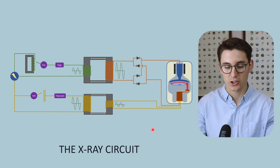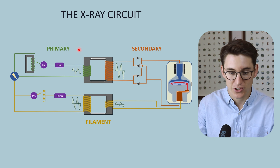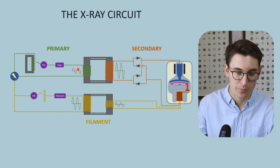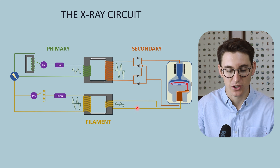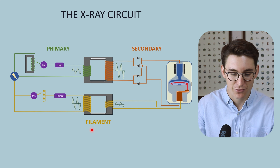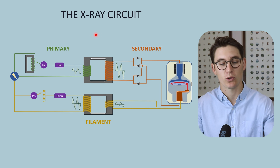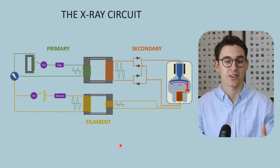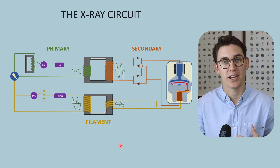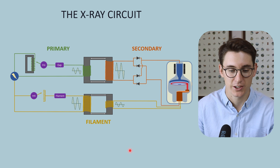In today's talk I'm going to be looking at what's known as the primary x-ray circuit. Our x-ray circuit can be separated into a primary low-voltage circuit, a secondary high-voltage circuit, and a filament circuit. Over the next three talks I'm going to look at each one individually, showing you the components and their functions within those circuits.